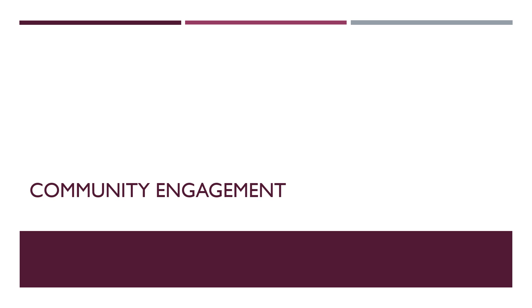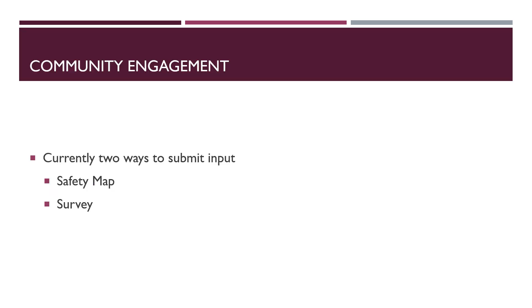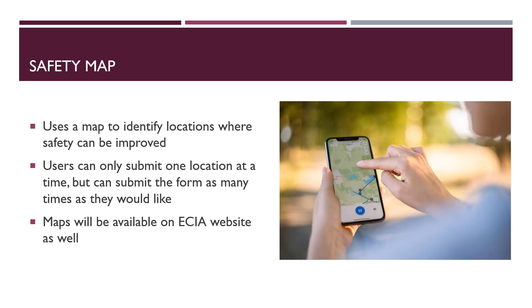Now getting into community engagement, there are currently two ways to submit input to the plan, with additional opportunities planned for the future. The first option is the transportation safety concern mapping tool. The mapping tool allows users to identify specific locations where safety can be improved. The tool allows users to select a location and report a safety concern or provide a safety improvement idea for that location. Users are encouraged to submit their input for as many locations as they like, and the map showing the results of these surveys will eventually be shown on our website for public viewing.